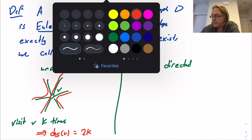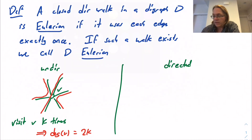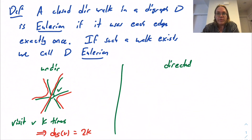In the undirected setting, assuming your graph is connected and satisfies that condition — every vertex has even degree — then we proved that you are in fact Eulerian: you do have an Eulerian walk. Now let's hop over to the directed setting and see what happens there.